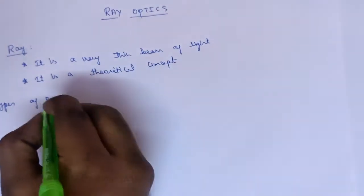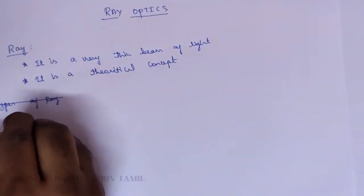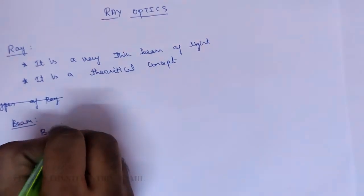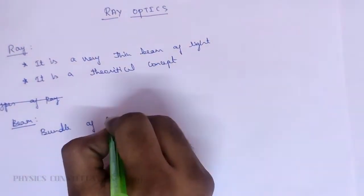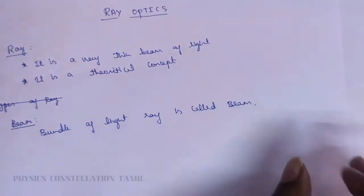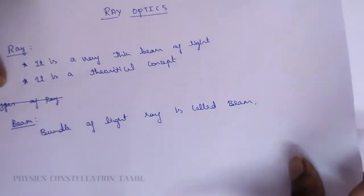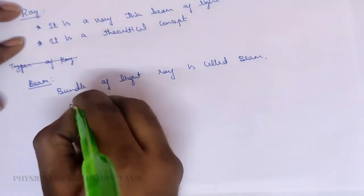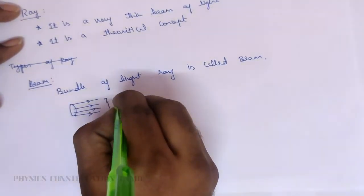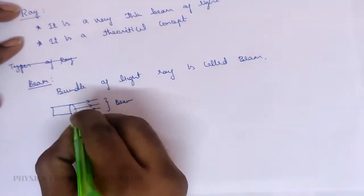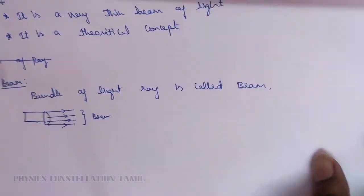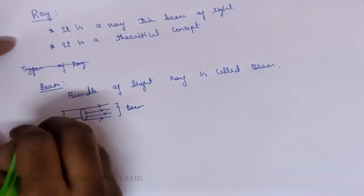Before writing types of rays, we can write what is a beam. A bundle of light rays is called a beam. The rays combined together form a beam. So, types of beams: